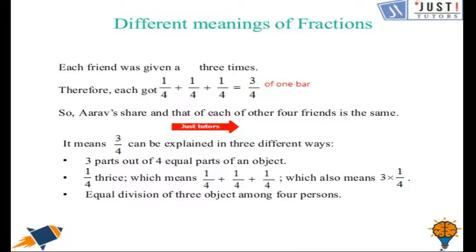Now it represents that we can explain 3 quarters in these 3 different ways. 3 parts out of 4 equal parts of any object. 1 quarter thrice or 1 quarter multiplied by 3. As we are repeating 1 quarter 3 times, we're multiplying it by 3. And 1 quarter add 1 quarter add 1 quarter. Here we are using addition. And it is also same as equal division of 3 objects among 4 persons.